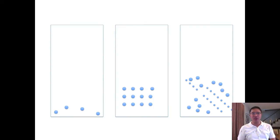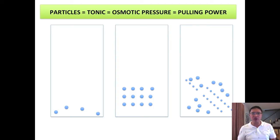Right now I have three solutions. One is hypotonic, one is isotonic, and one is hypertonic. You already know, the greater the particles, the greater the tonicity, the greater the osmotic pressure, and the greater the pulling power.